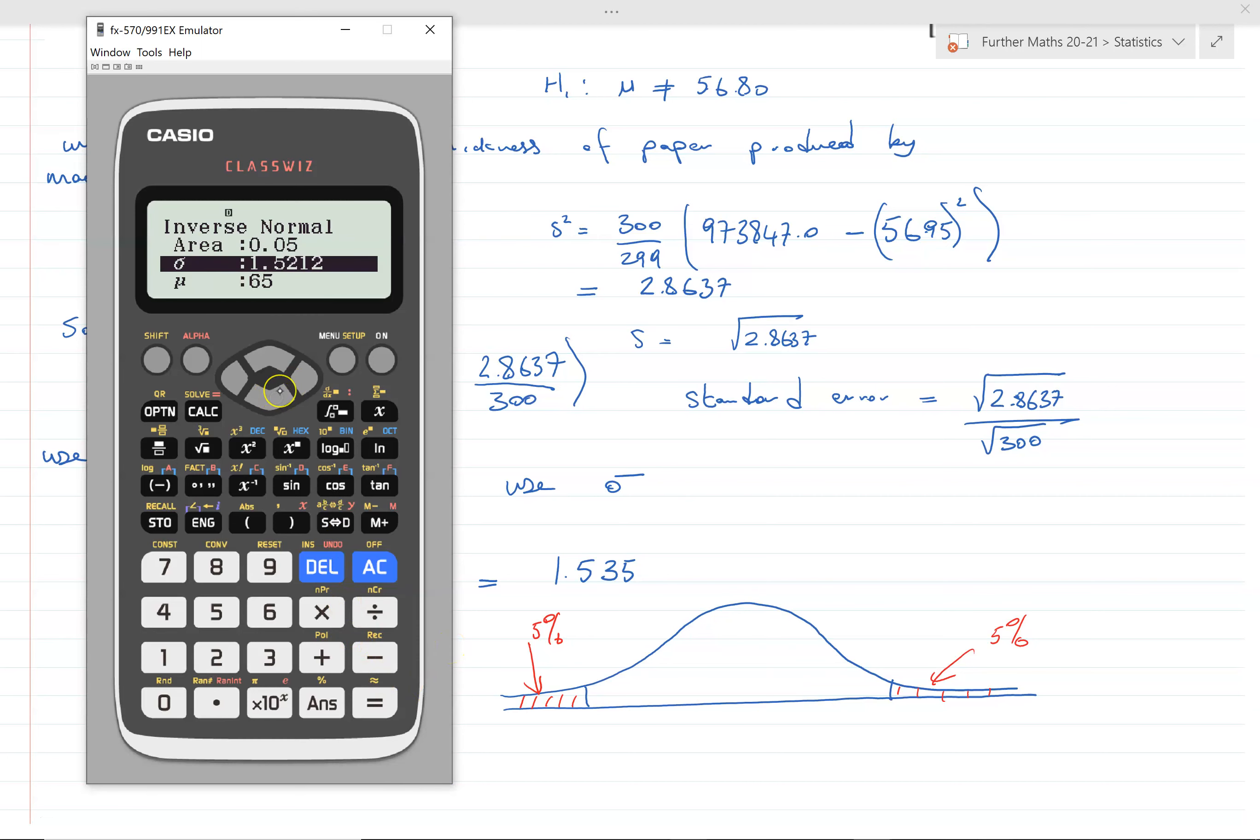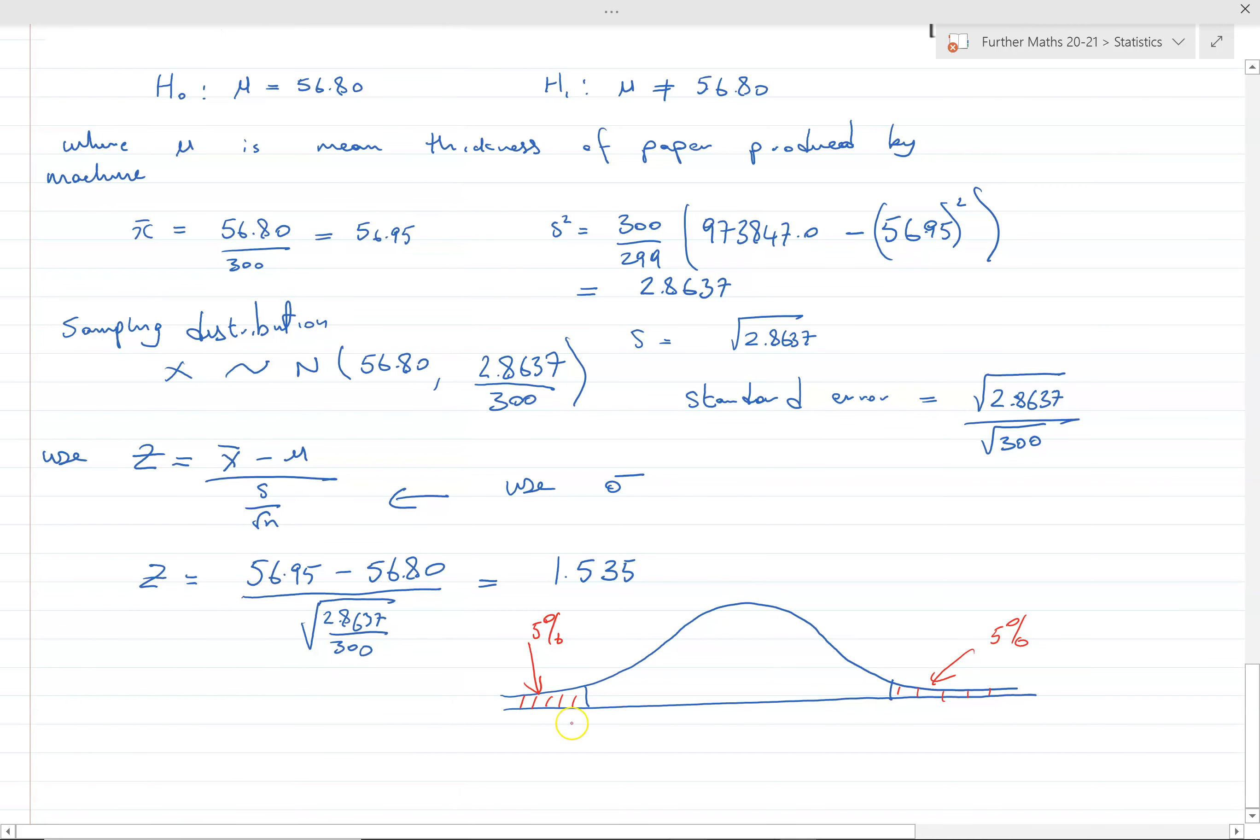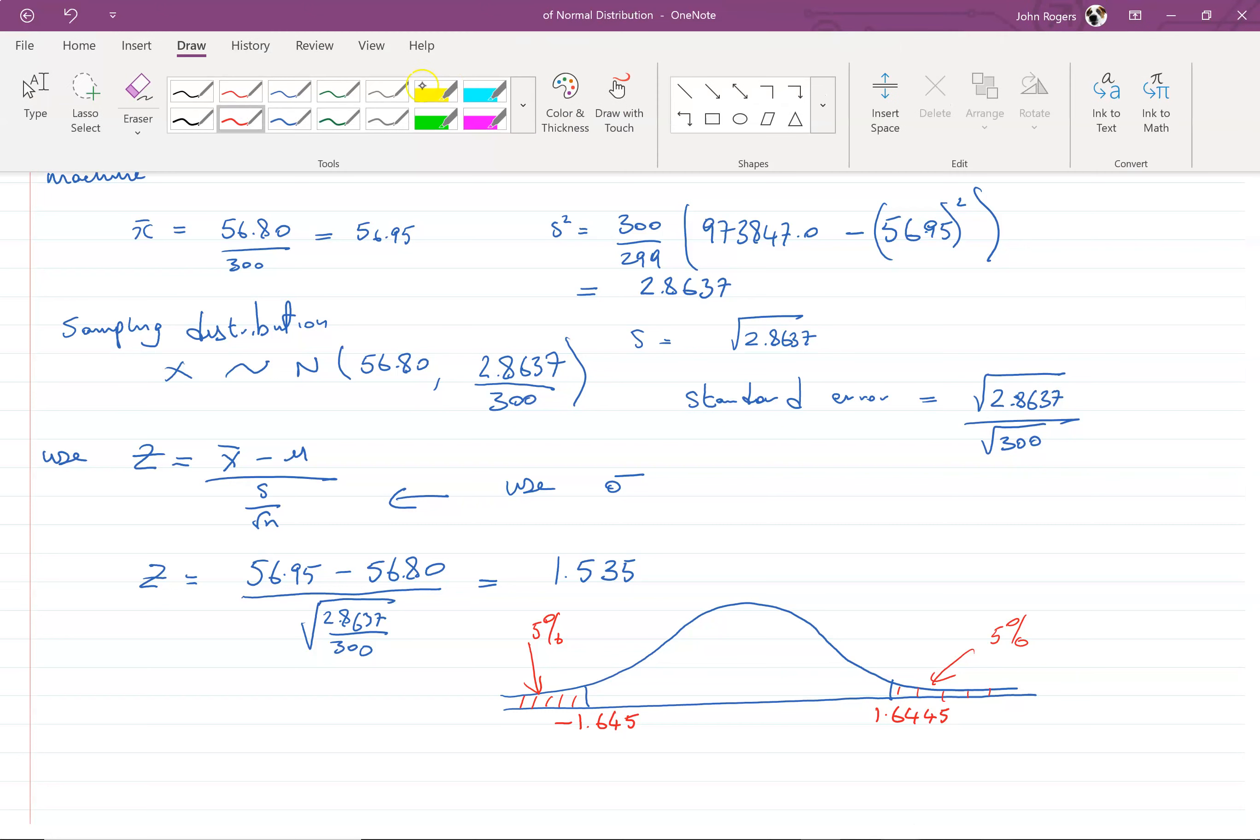We go to inverse normal, I'll put 0.05 in to get the negative value, standard deviation 1, mean 0. The critical value is -1.6445 to four significant figures, so it would be 1.6445 on that side.